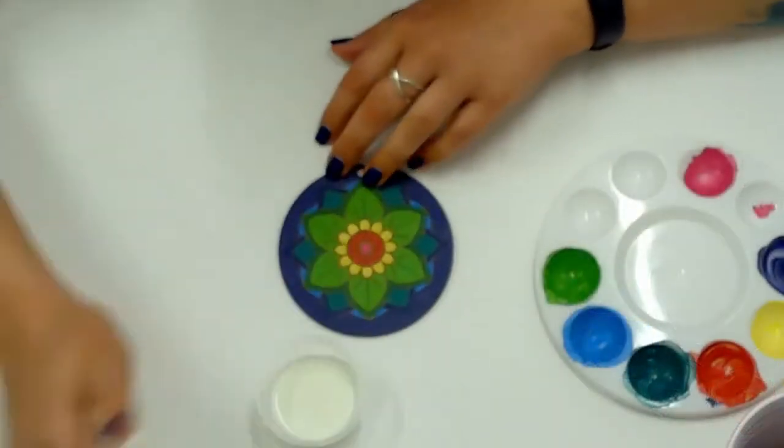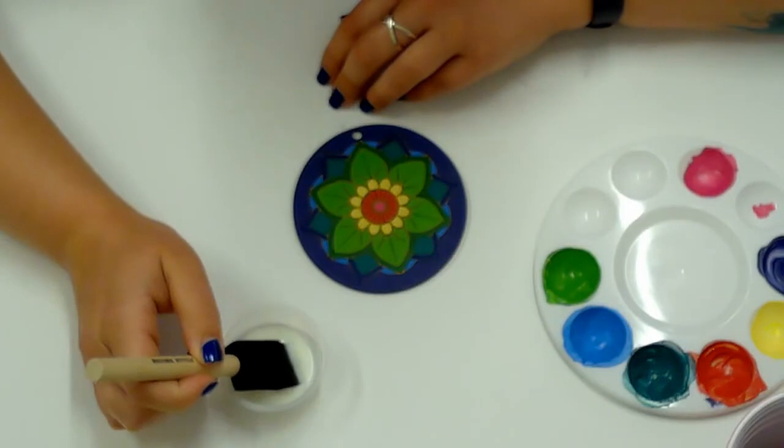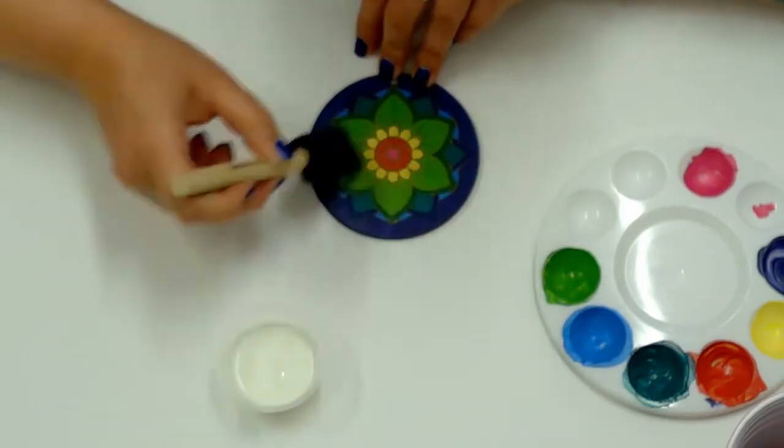Once all the masking tape has been removed, apply the first coat of Mod Podge quickly, without going over the same spot too many times or the paint will begin to smear.